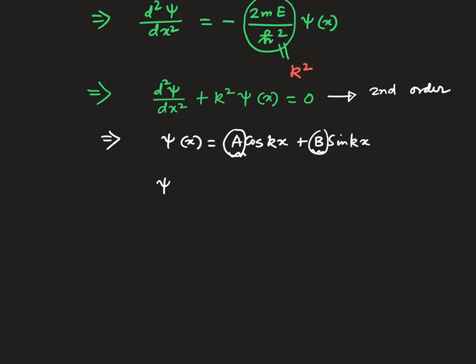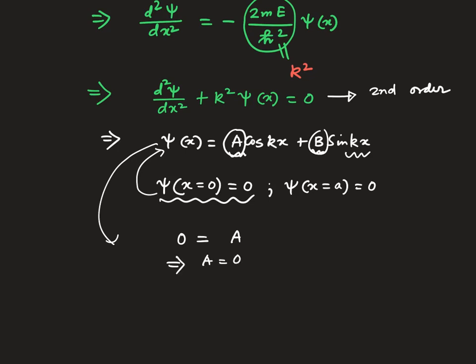So first condition is ψ at x equals to 0, because at that point the potential is infinity, and another boundary condition will be at x equals to a. So let us start with this condition. If you apply this condition to this solution, you put 0 equals A cos 0, which is 1, and this one becomes 0 for the sin part. That implies you got A equals 0.